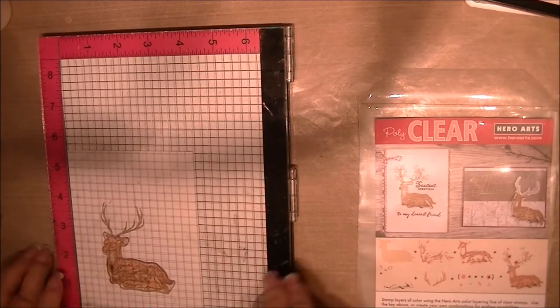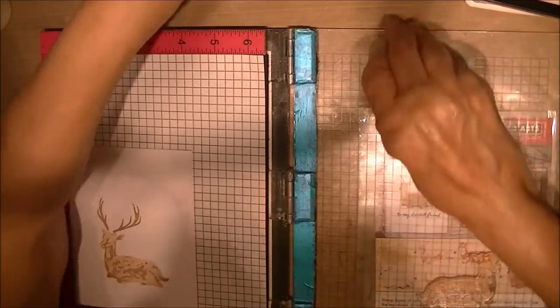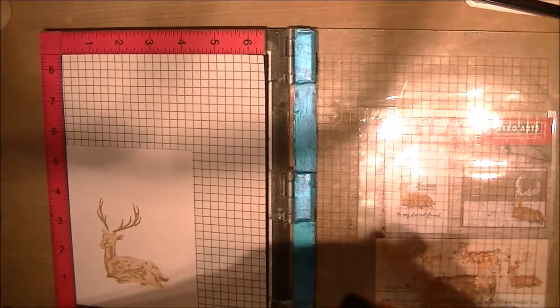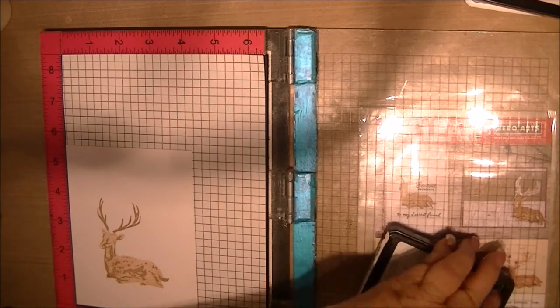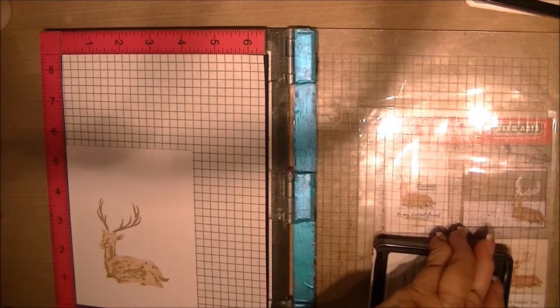I'm stamping with my third color, which is Gina K Warm Cocoa. And I'm using the dark chocolate for step four. This is step three, I'm sorry.